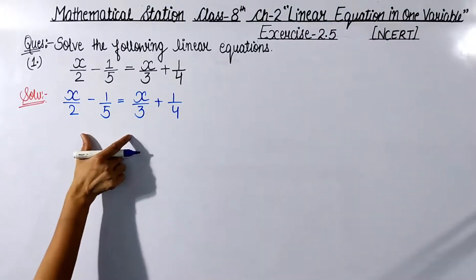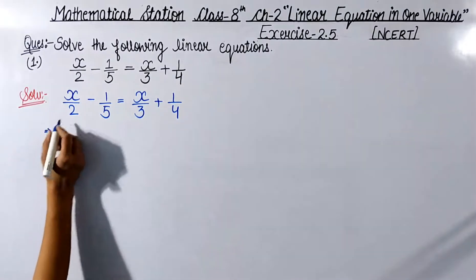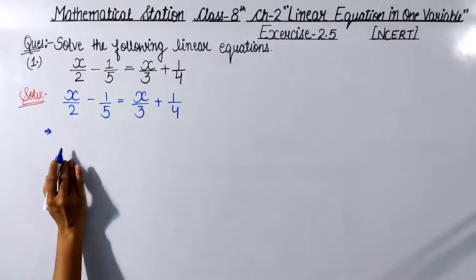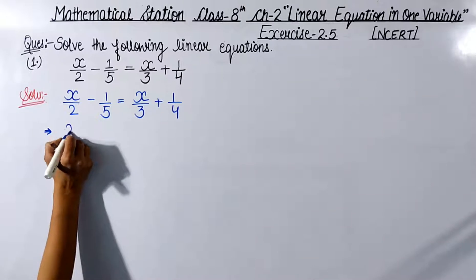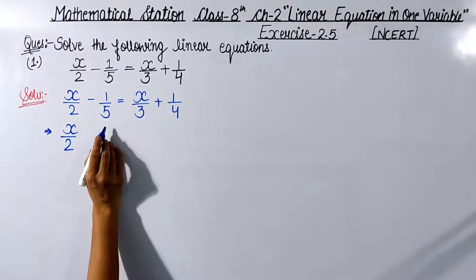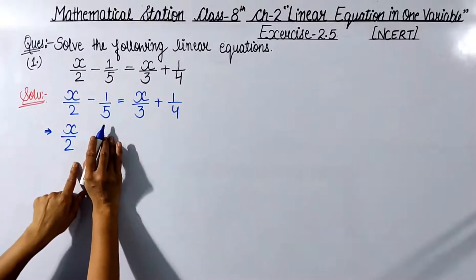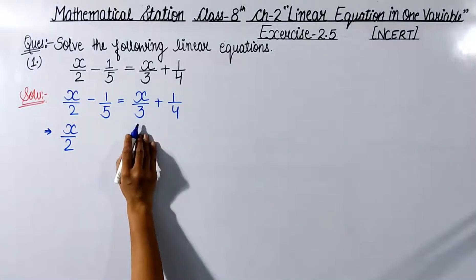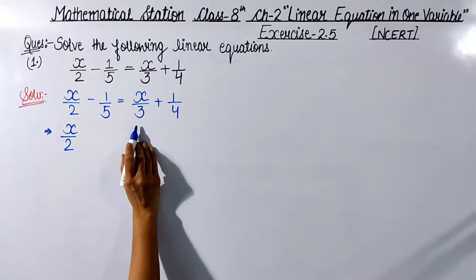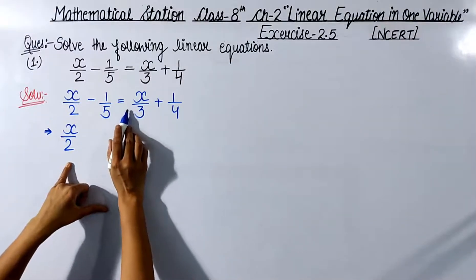In this equation, whatever variable terms are present, we shift all variables to one side. On the LHS, x upon 2 is a variable term, so we keep it on the LHS. The constant term minus 1 upon 5 stays for now. On the RHS, x upon 3 is a variable term, so we transfer it to the LHS, giving minus x upon 3.